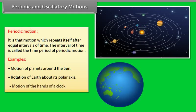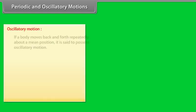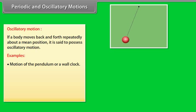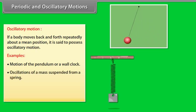If a body moves back and forth repeatedly about a mean position, it is said to possess oscillatory motion. Some examples are: motion of the pendulum of a wall clock, oscillation of a mass suspended from a spring, and motion of a swing.